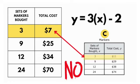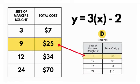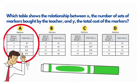Let's go to our final answer choice. We can plug in 9. There's 9 again. We know that 9 results in $25, so that doesn't work. So when we look at this, A was our correct answer by plugging into a table. Which table shows the relationship between x, the number of sets of markers bought by the teacher, and y, the total cost of the markers? A.